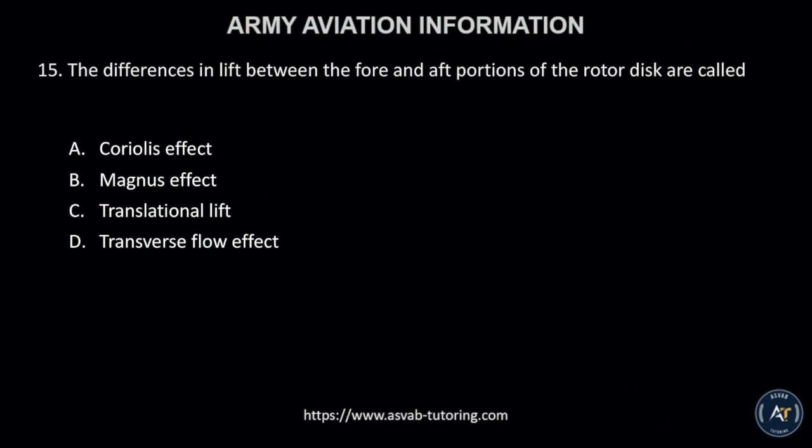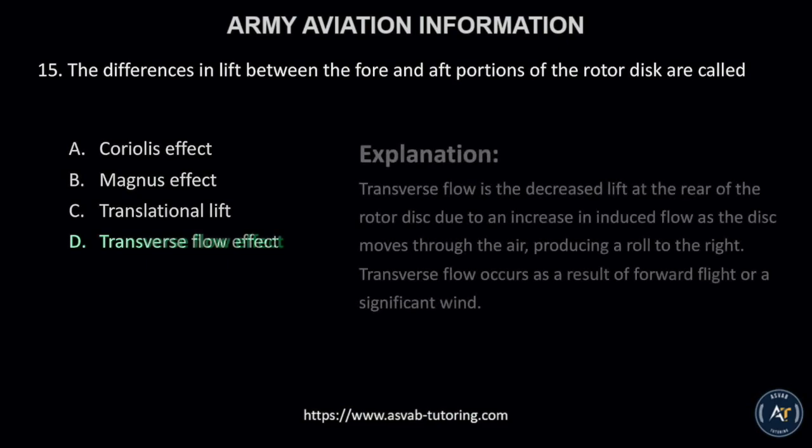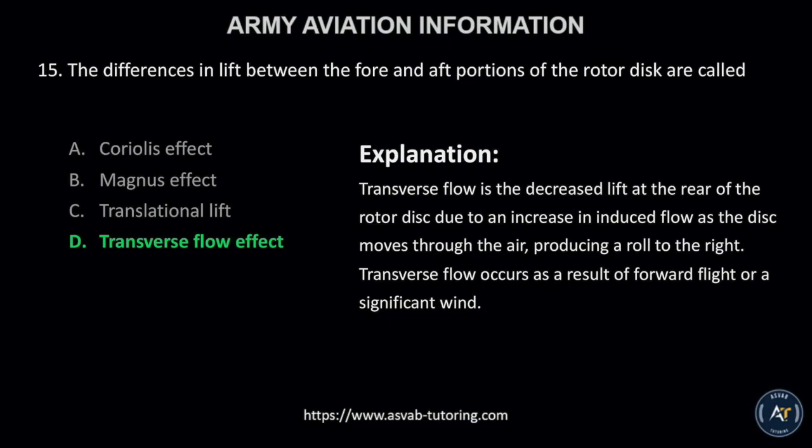Number 15. The differences in lift between the fore and aft portions of the rotor disc are called A, Coriolis effect; B, Magnus effect; C, translational lift; or D, transverse flow effect? The correct answer is letter D, transverse flow effect. Transverse flow is the decreased lift at the rear of the rotor disc due to an increase in induced flow as the disc moves through the air, producing a roll to the right. Transverse flow occurs as a result of forward flight or a significant wind.